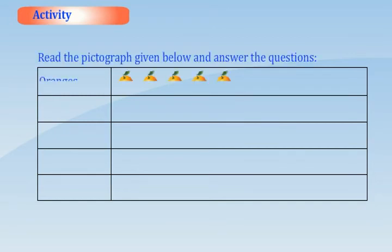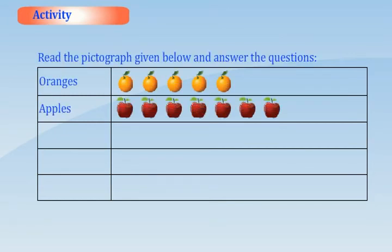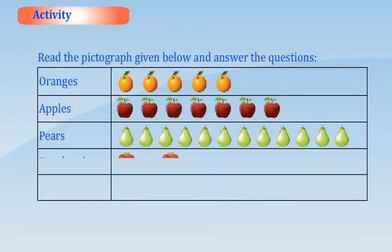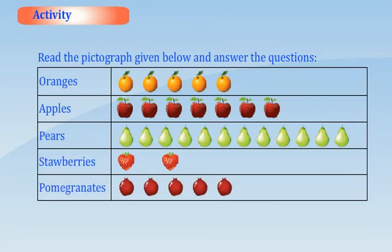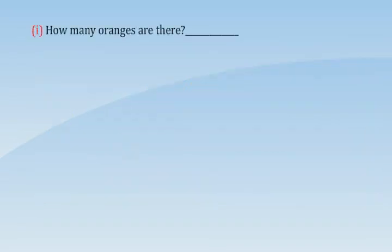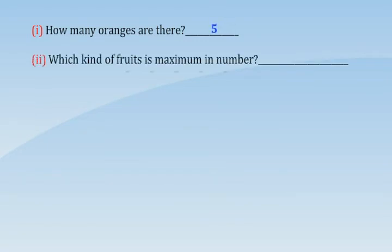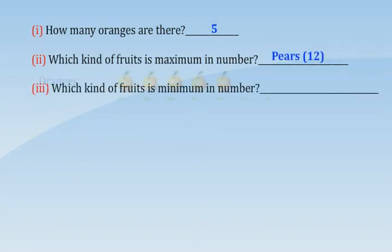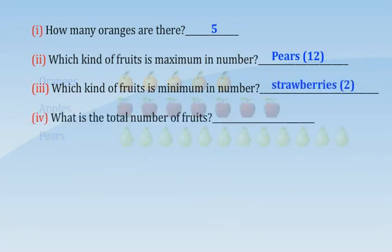Activity: Read the pictograph given below and answer the questions. The pictograph shows oranges, apples, pears, strawberries, and pomegranates. Questions: How many oranges are there? Which kind of fruit is maximum in number? What kind of fruit is minimum in number? What is the total number of fruits?